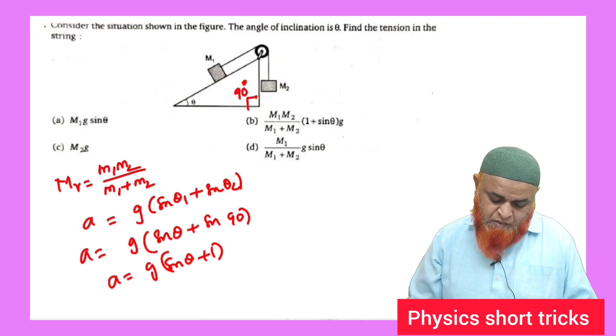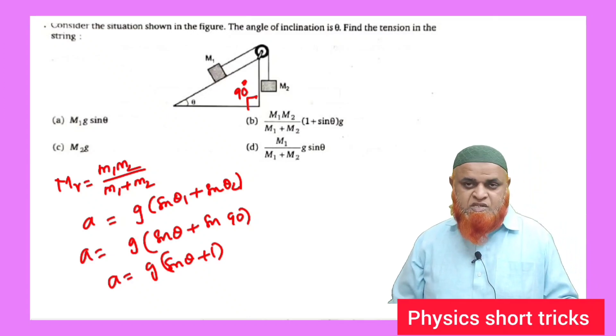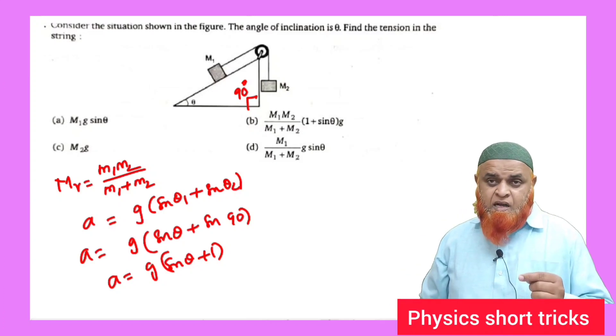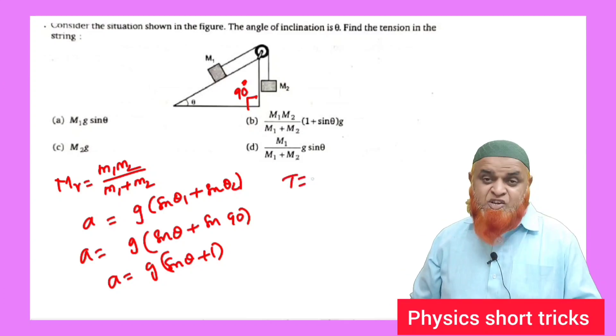You can write it like this, so a is equal to g times sine theta plus 1. This is a here.